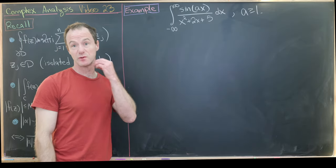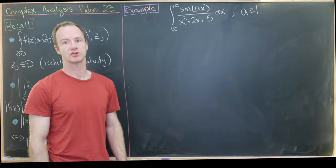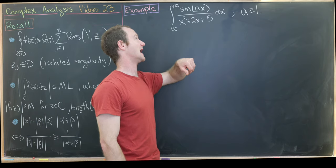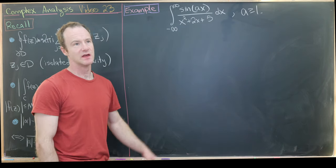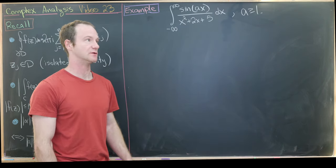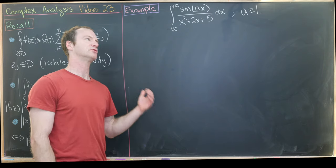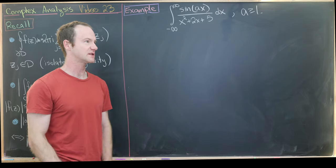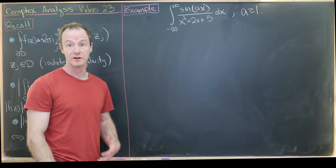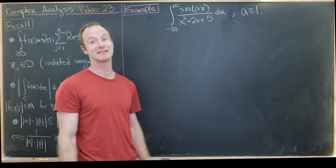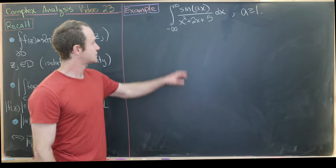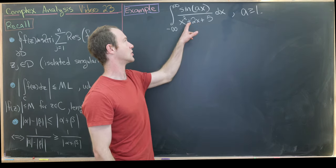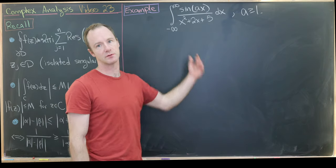For our next example, we have a trigonometric function along with a rational function: the integral from −∞ to ∞ of sin(ax) over (x² + 2x + 5) dx. This is one that would be quite a bit more difficult to evaluate without complex analytic methods. We impose the condition that a is a real number greater than or equal to 1. Since the poles of this function only occur at non-real zeros of this polynomial, we can probably use the same semicircular contour as before.